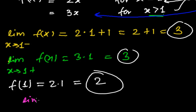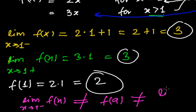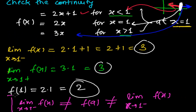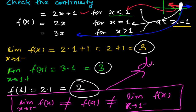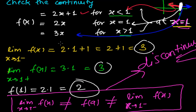This does not satisfy our condition. The left hand limit as x tends to 1 minus is not equal to the value of the function, and the right hand limit is also not equal to the value of the function. Therefore this function is discontinuous — or simply, it is not continuous at x equals 1. It may be continuous somewhere else, but at x equals 1 it is not continuous.